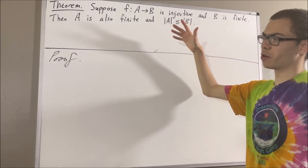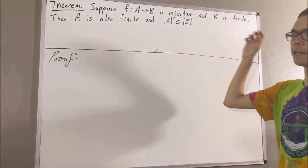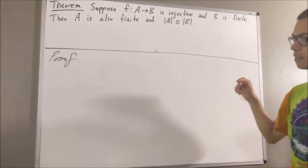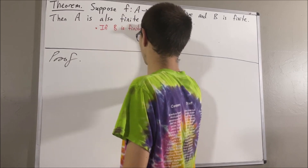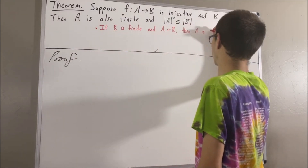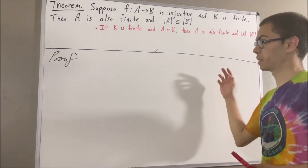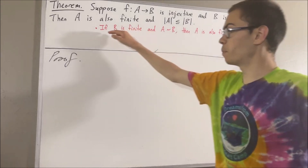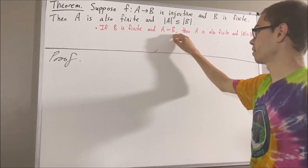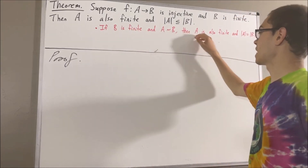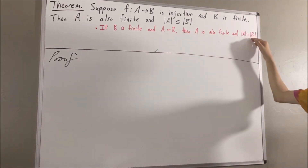Now in proving this theorem, we are going to use two preliminary results regarding finite sets. Here's the first one. Given any two sets A and B, if B is finite and there is a bijection from A to B, then A is also finite, and the number of elements in A is equal to the number of elements in B.